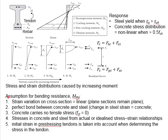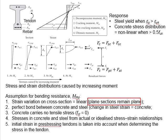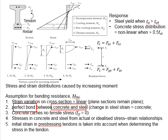First, we assume that the strain variation across the cross-section is linear — that is, the section's strain follows a straight line from the top of the beam to the bottom. We also assume that plane sections will always remain plane even when undergoing bending deformations. Additionally, we assume there is a perfect bond between the concrete and steel, meaning the change in steel strain will be the same as the strain in the surrounding concrete.